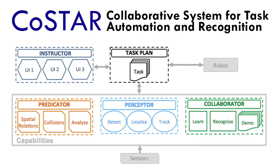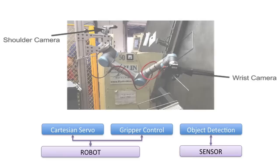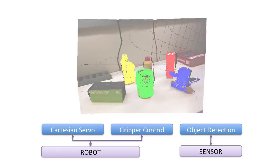The COSTAR system provides modules that focus on three key challenges. The first challenge we address is creating modular, generalizable robot programs. We created a model for robot capabilities, where a robot with a diverse set of hardware elements, like cameras, and software components, like object detection algorithms, exposes a set of concrete operations that can be performed.